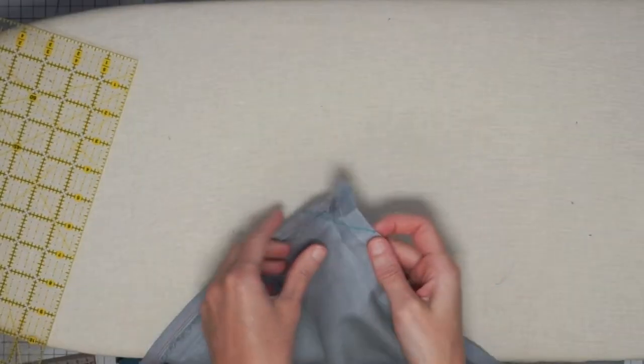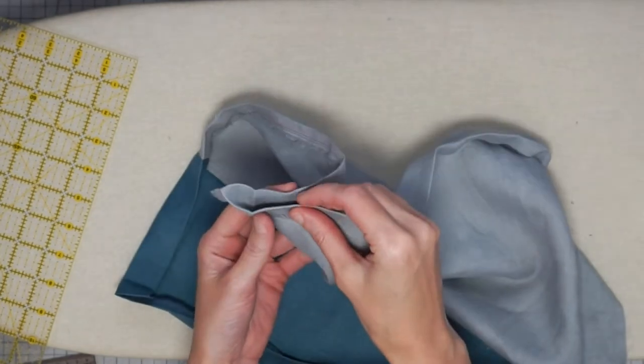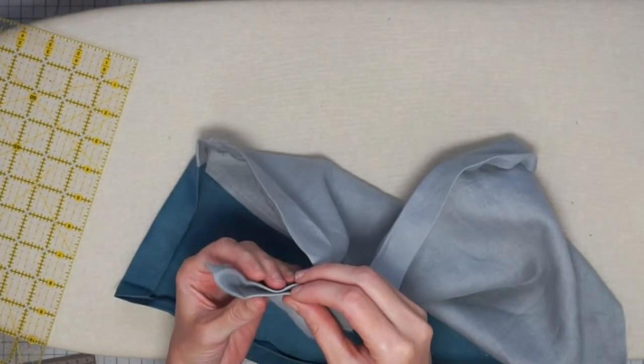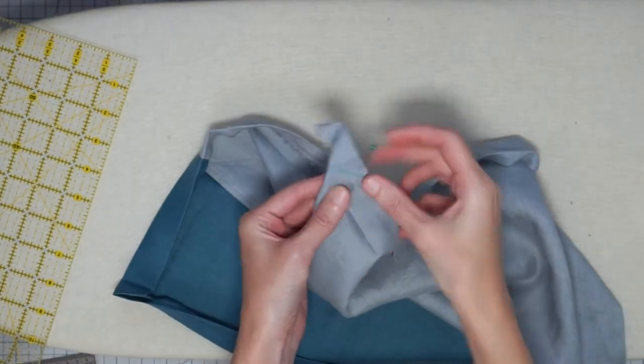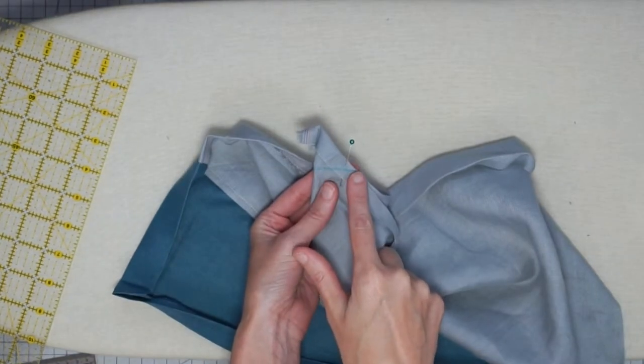So then you fold your fabric right sides together, line up your dots and just fold it with a pin, and then we're going to stitch right along that line.